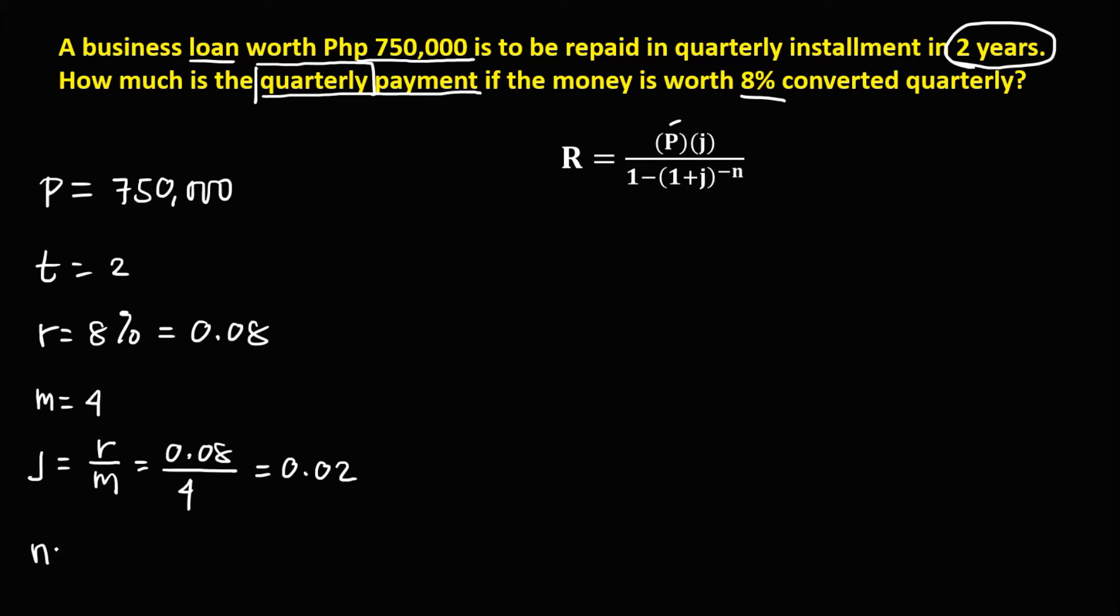And to solve for the number of periods, that's N. So we have M times the time, M is 4, and the time is 2, so the number of periods is equal to 8. So to solve now for this problem, substitute now all these values to this formula.